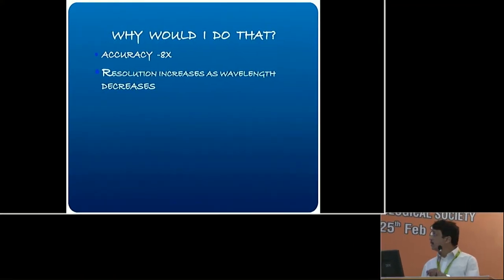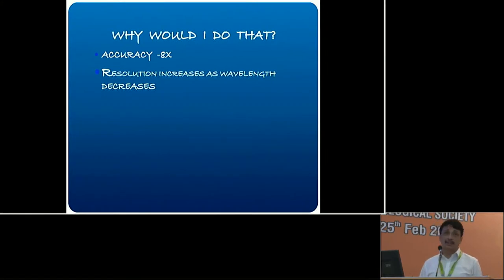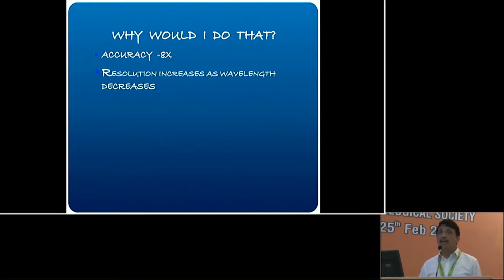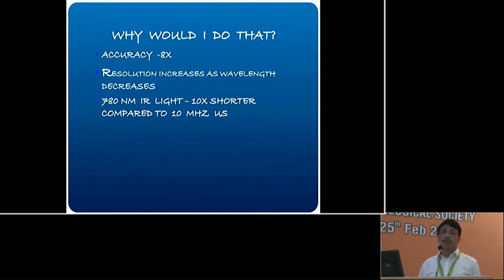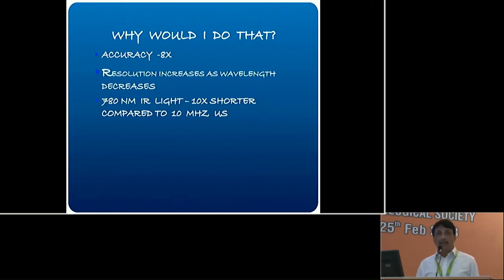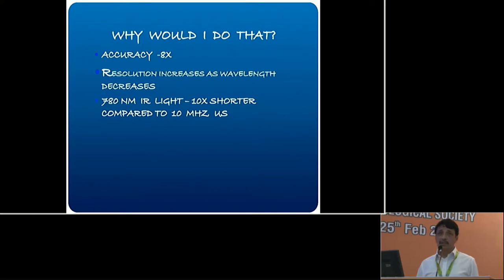Why is that? Resolution increases as wavelength decreases — basic principles of physics. Infrared light at about 780 nanometers wavelength is about 10 times shorter than that of a 10 megahertz ultrasonic probe. The wavelength is shorter, so resolution increases and accuracy increases. That is one particular reason why I should switch to optical biometry.